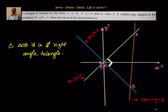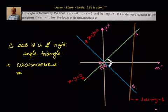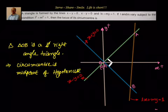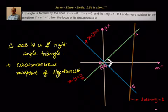Now, what we know about a right-angle triangle is that the circumcenter is the midpoint of the hypotenuse. So if we are able to find out the coordinates of A and B, we can find out the midpoint of AB. Let us say that midpoint is h comma k, which is the circumcenter. Then we can equate them and find out the locus of the circumcenter.